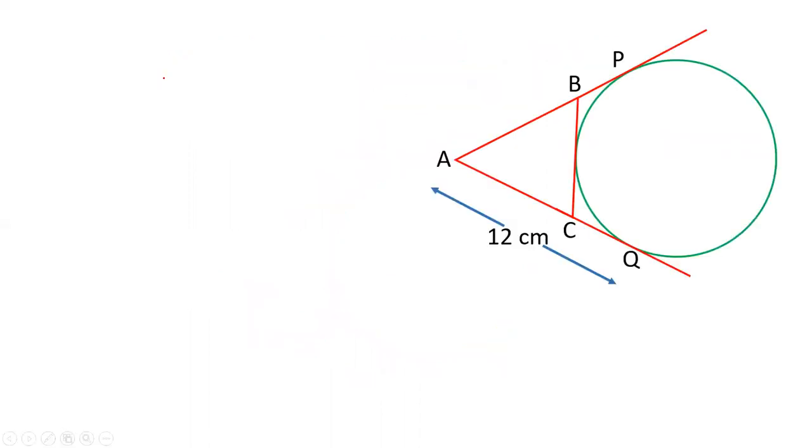The tangents from an external point to the circle are always equal. The reason is, if I join OP, if I join OQ, and let's say this point is O the center, and join AO.